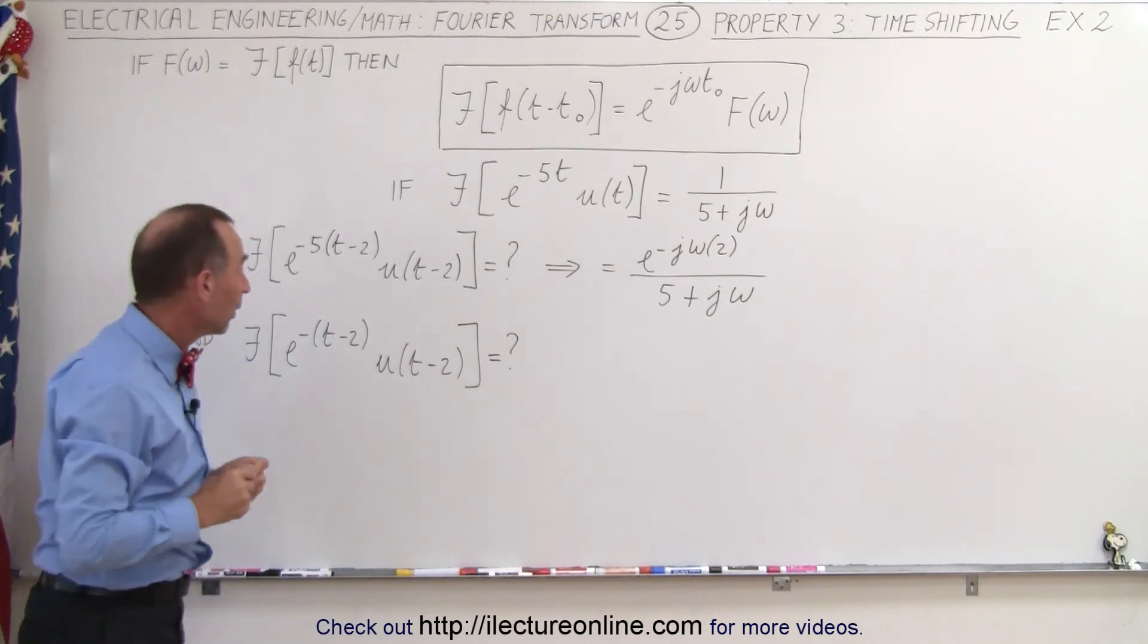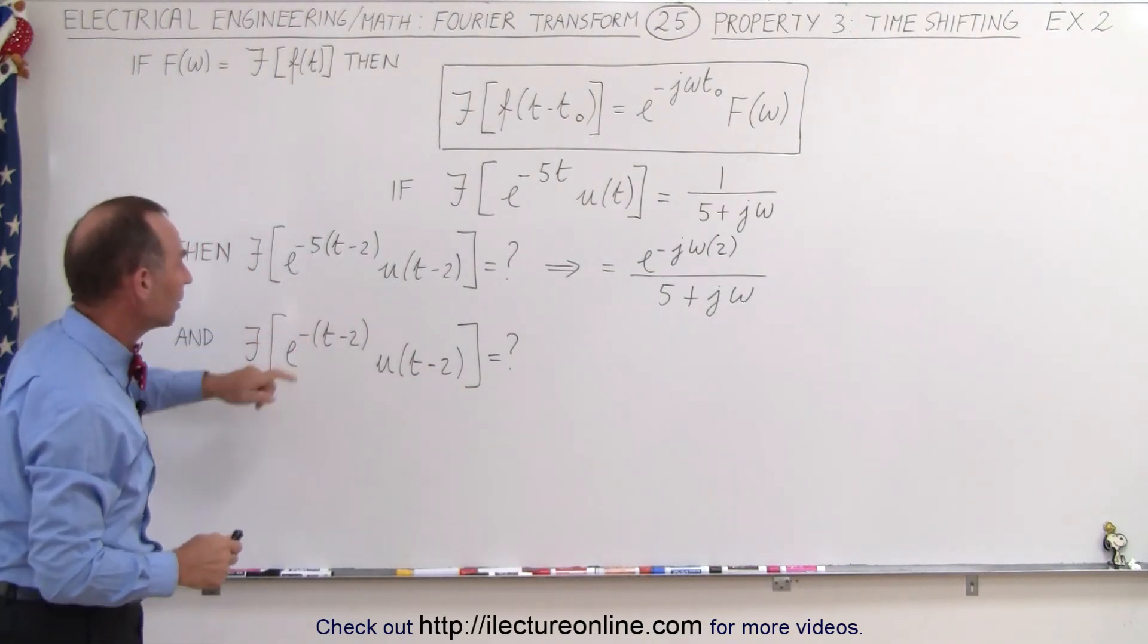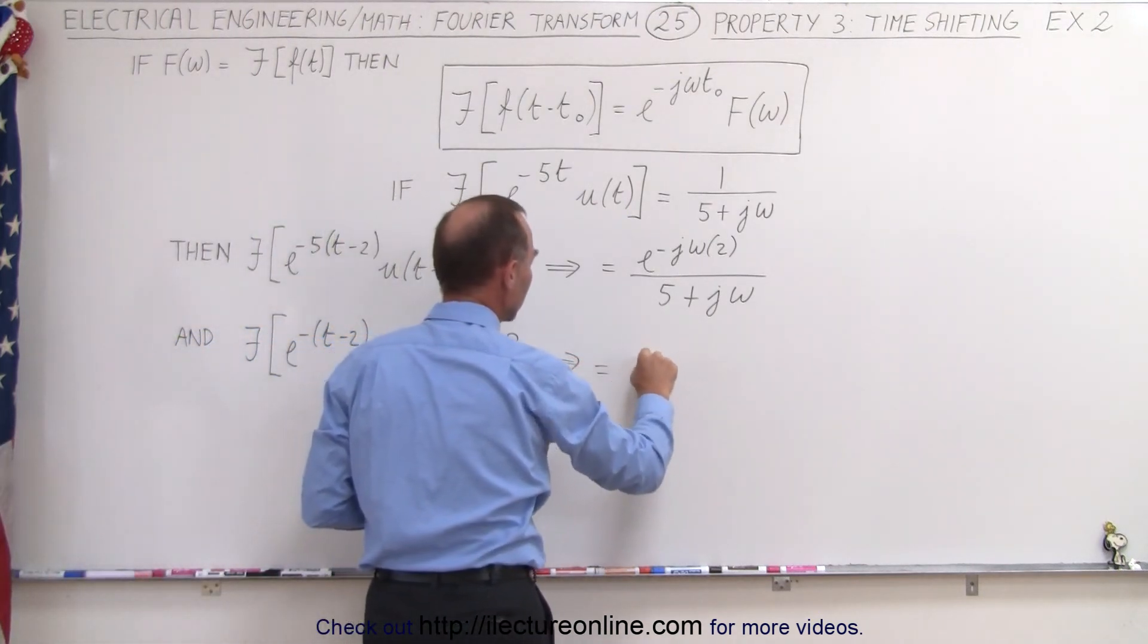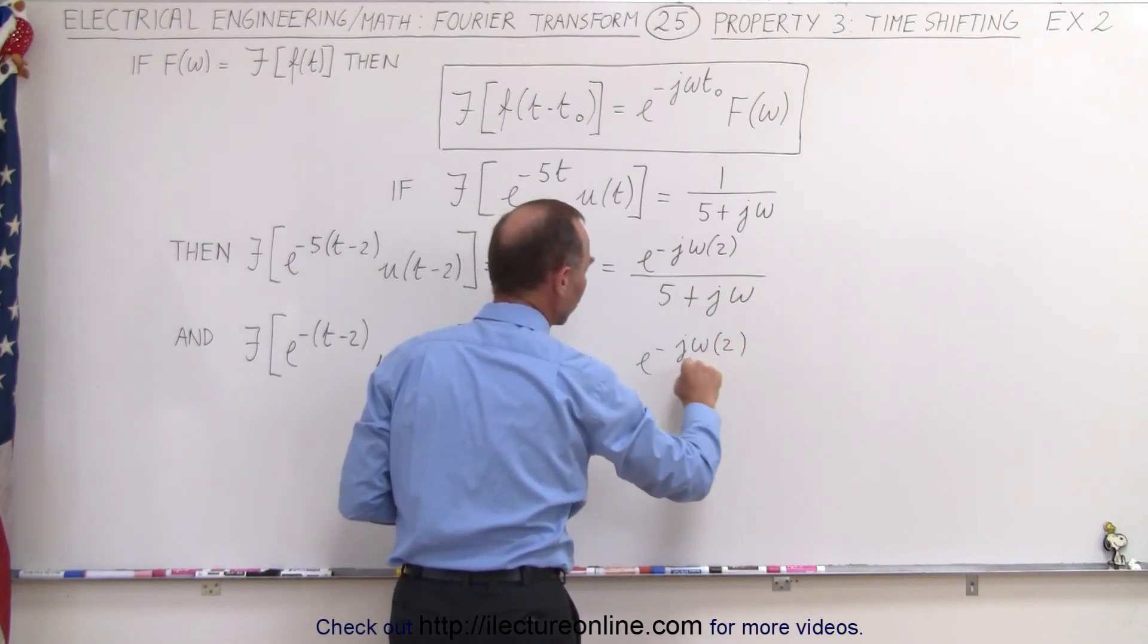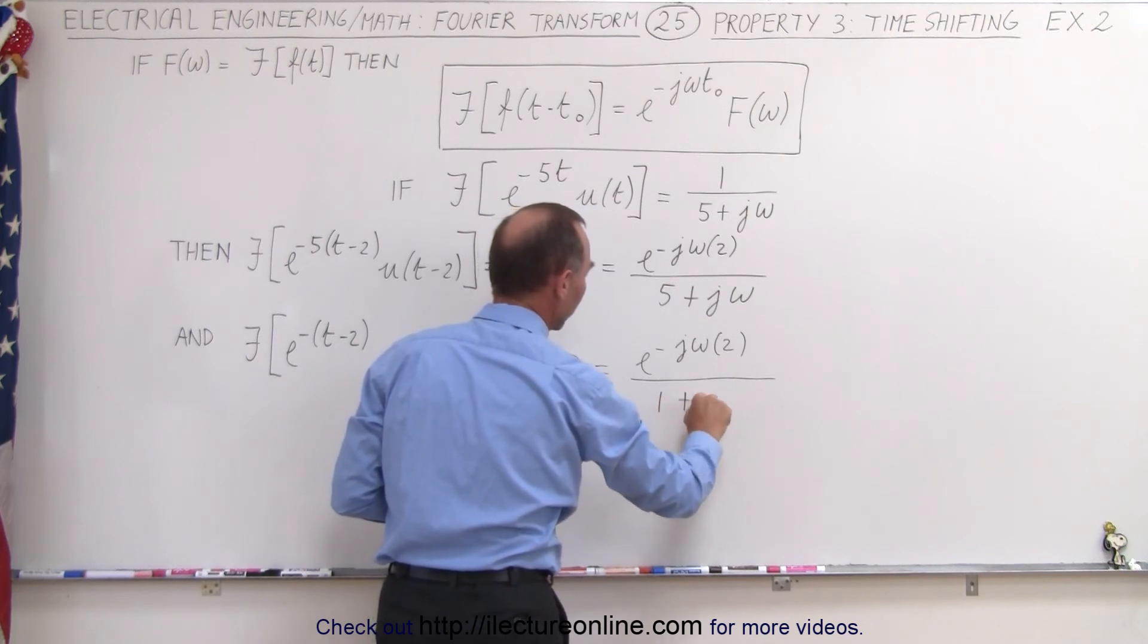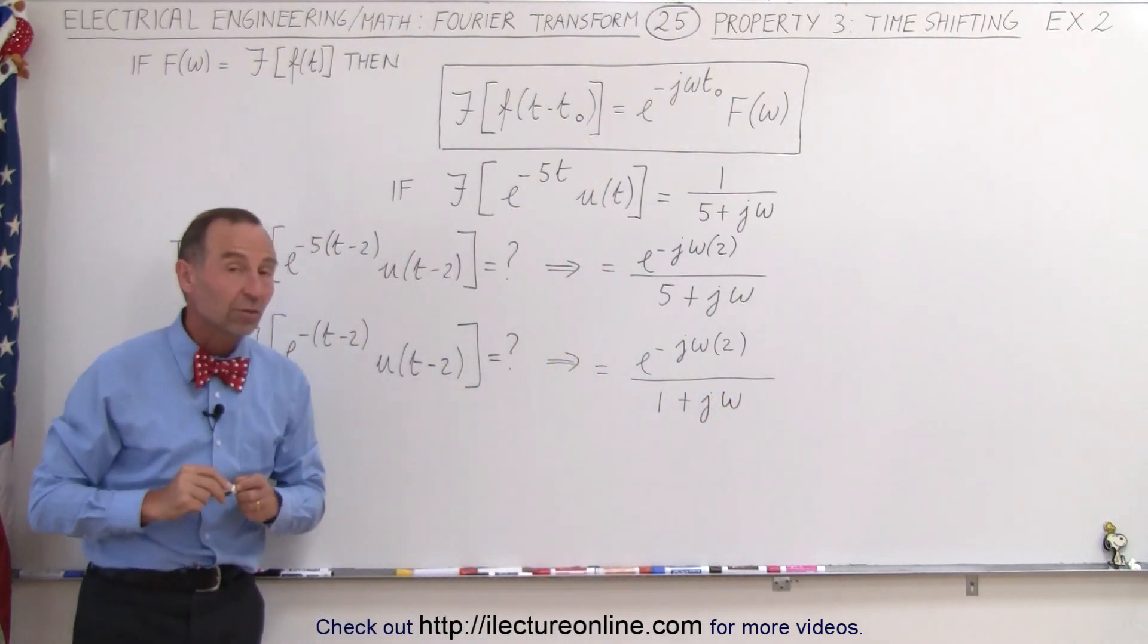Now what happens when we again have a shift of 2, but instead of a 5 we have a 1 here? Then this becomes equal to e to the minus jω times 2. So that hasn't changed. In the denominator, instead of a 5 here, we're going to have a 1 plus jω. Notice that's the only change we would have then.